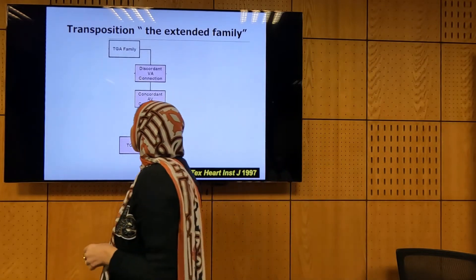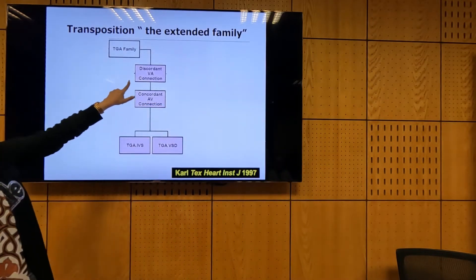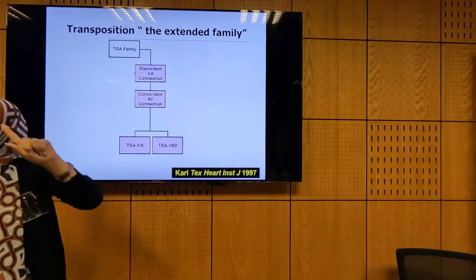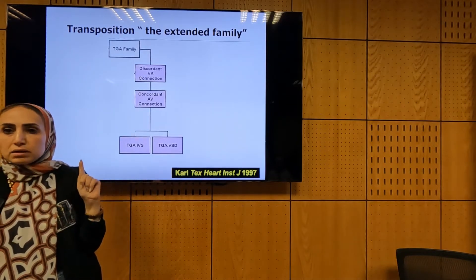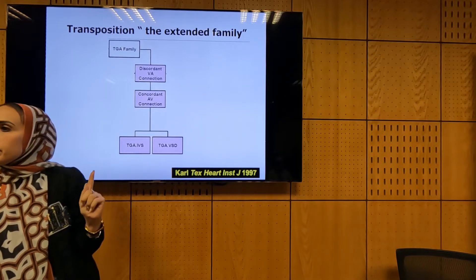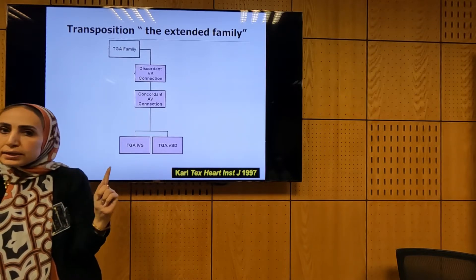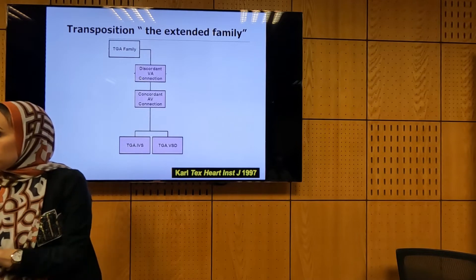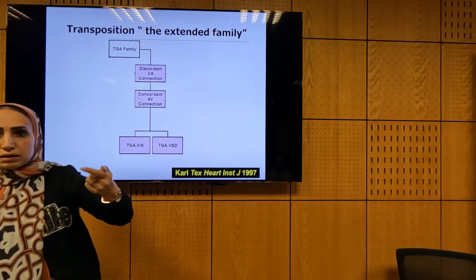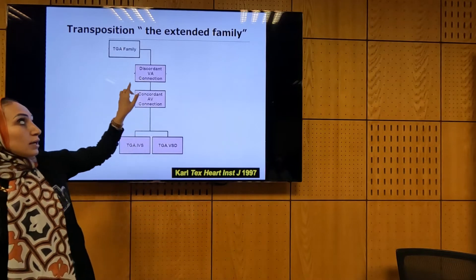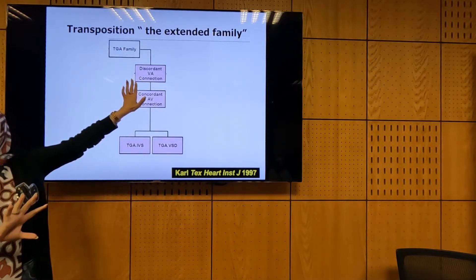What we mean by TGA physiology is discordant ventricular arterial connection. This is point number one in this lecture. When I say transposition of the great vessels, I mean connection — that each ventricle is connected to an artery. We should have a connection between the ventricle and the artery. But what's wrong is that each ventricle is connected to the wrong artery.